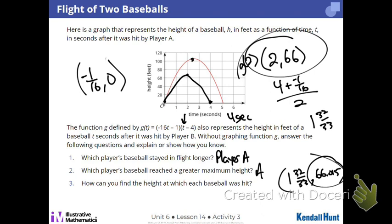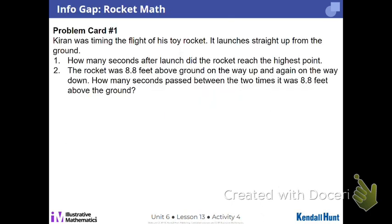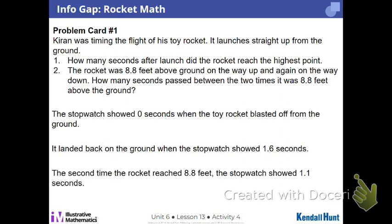No new ideas, right? No new ideas. Next up, we have an info gap. So you need to answer these questions. In order to do this, I will only give you certain information, and you must ask me the right question to get that information. So a rocket is being launched from the ground. How many seconds did it take to reach its highest point? Also, it was 8.8 feet above the ground twice. How many seconds passed between the two 8.8s? So come up with a list of questions to ask me in order to answer these. So you've got all the information you need to answer this question. Let's go.